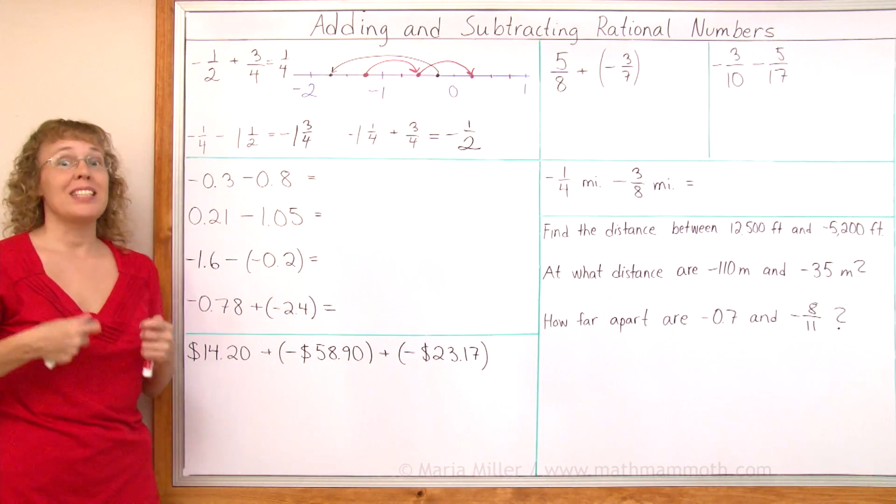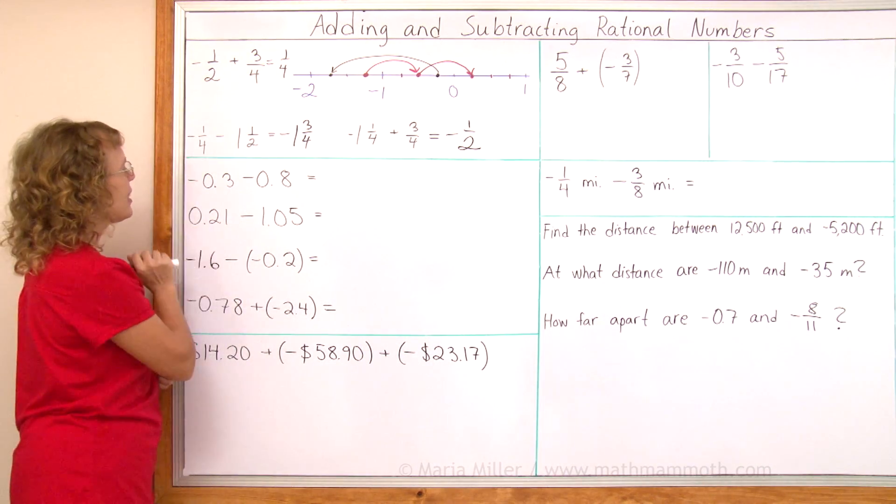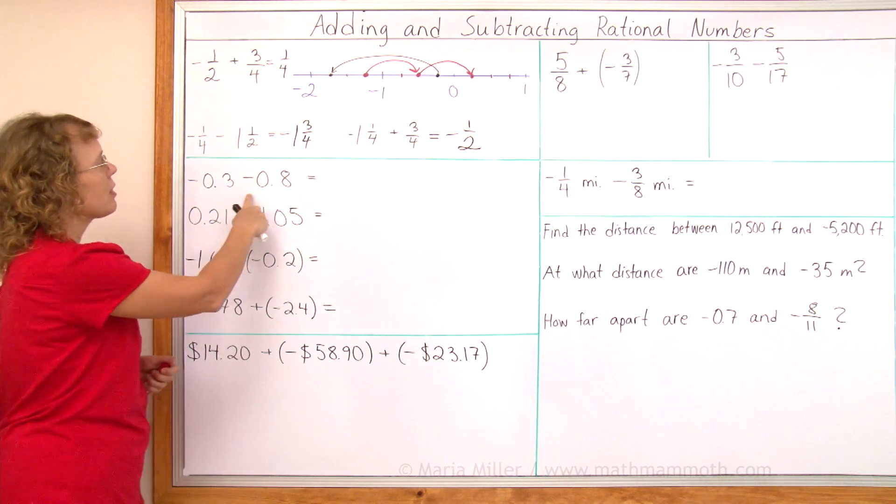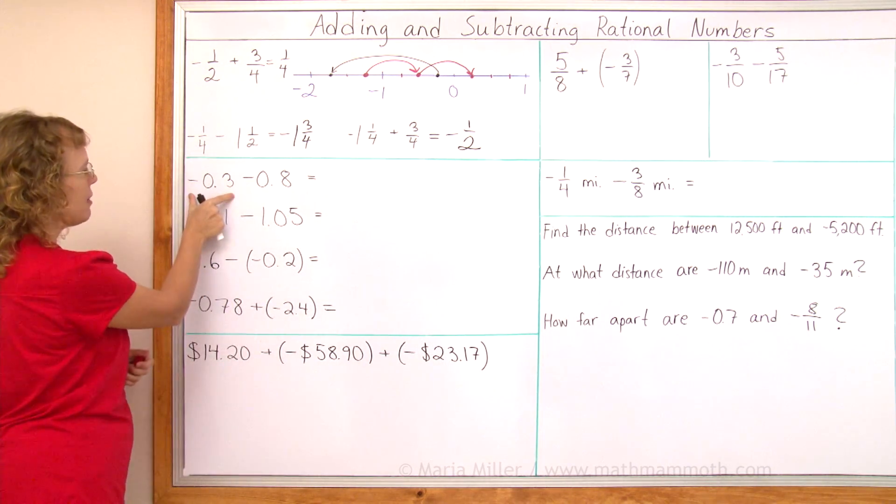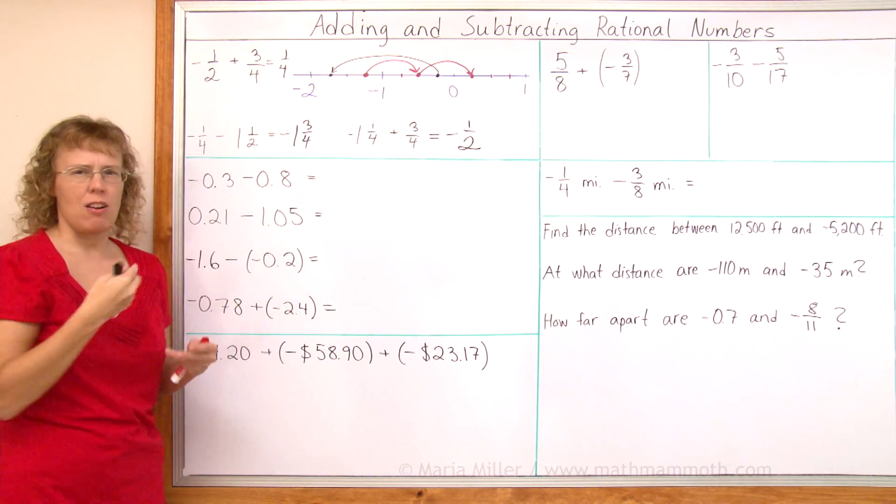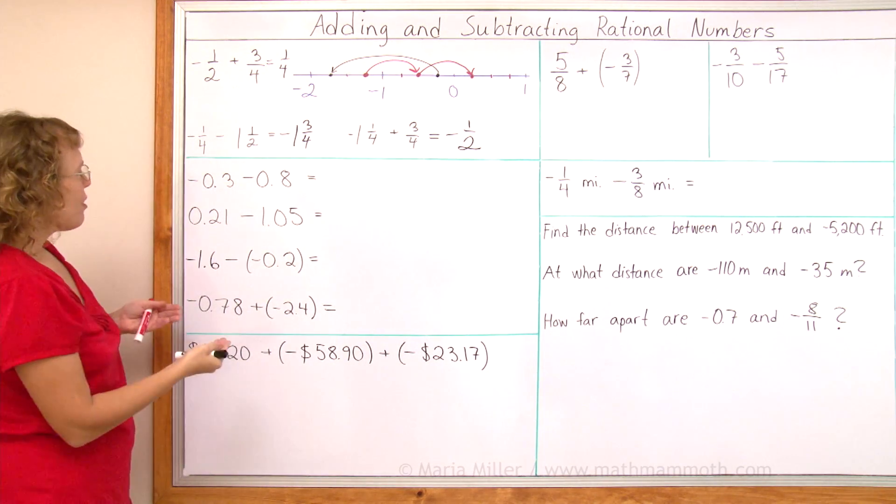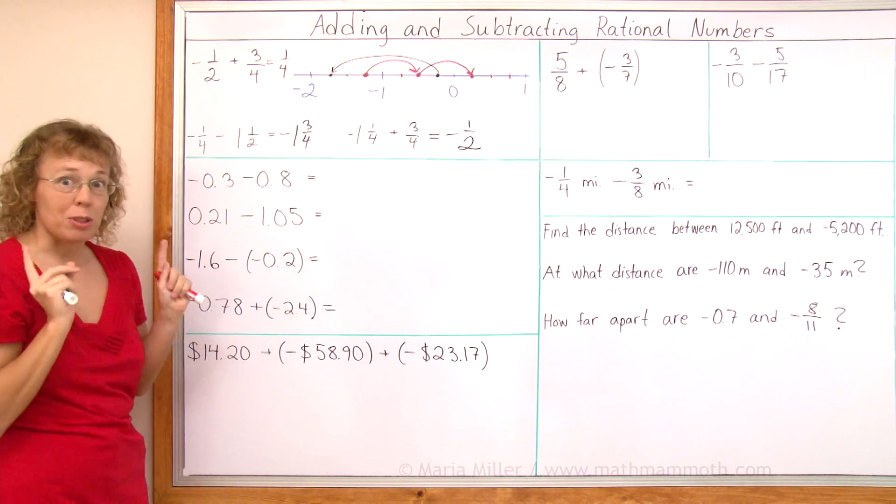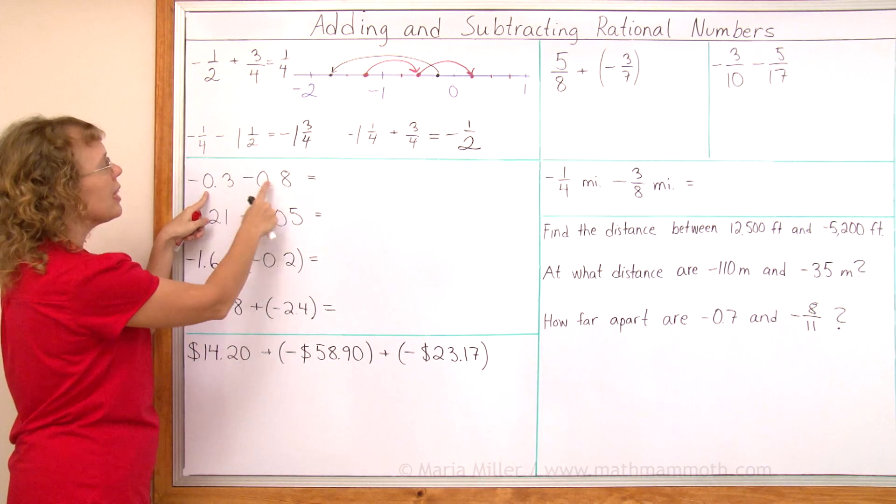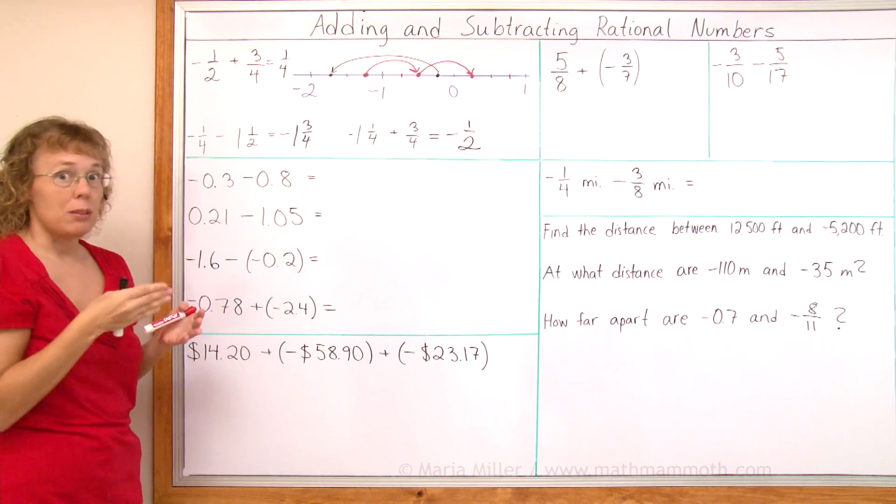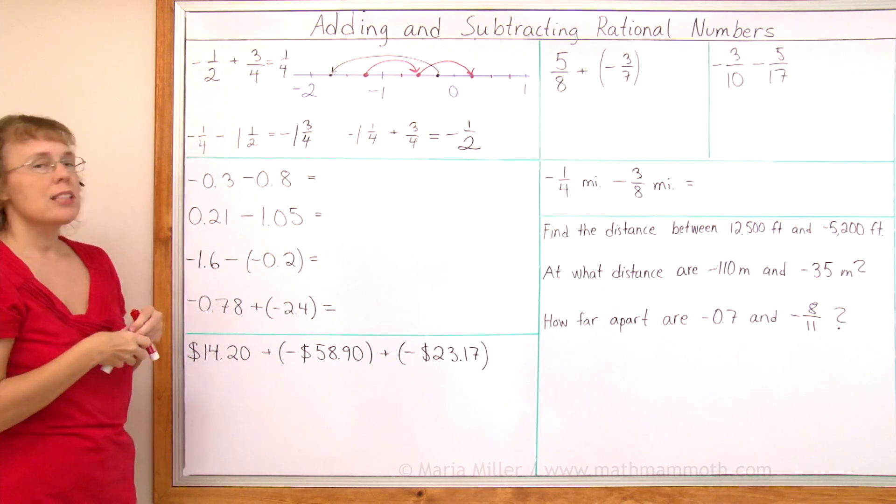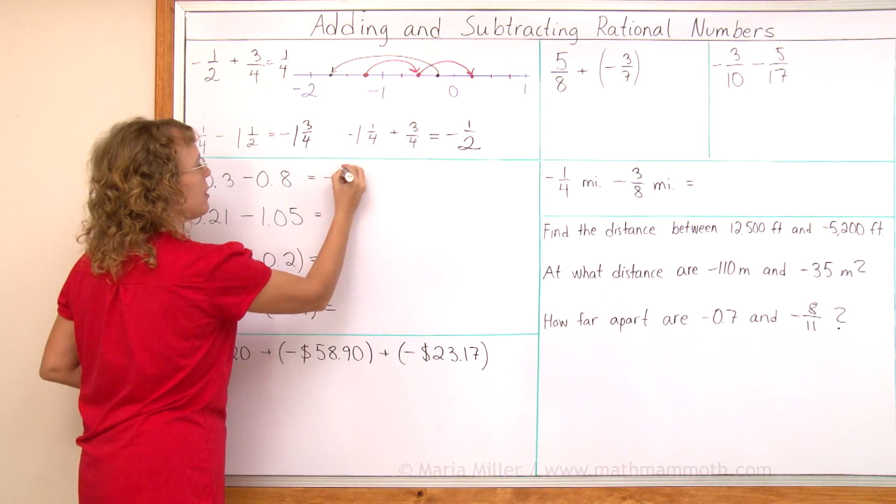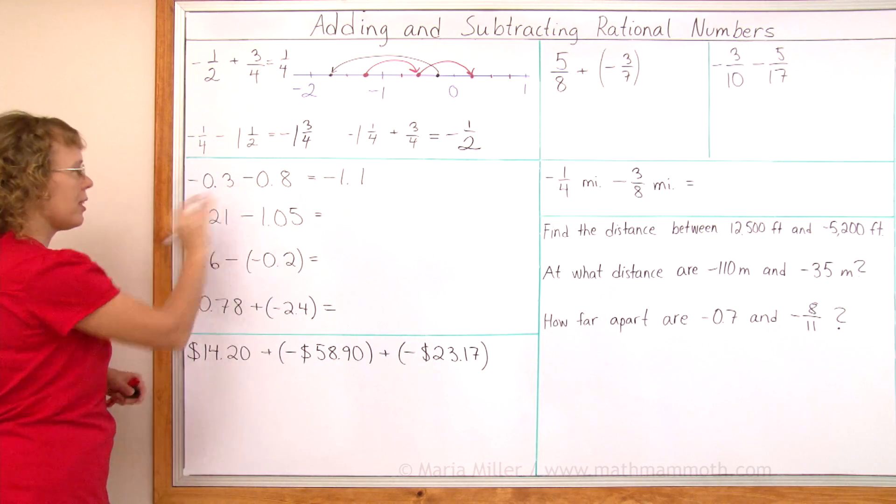Now let's do some decimals. This one is easy. Negative 0.3 minus negative 0.8. There's some negatives and some more negatives. That's how I think about it. So therefore, I will add these plain numbers, or the absolute values. I will add three-tenths and eight-tenths. I get one and one-tenth, 1.1. But it's all gonna be negatives. So the answer is negative. Negatives and more negatives.